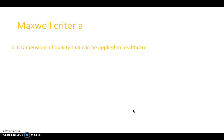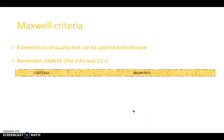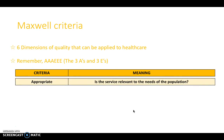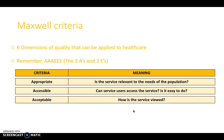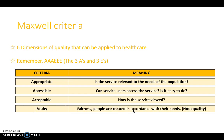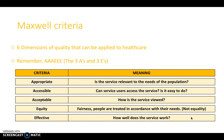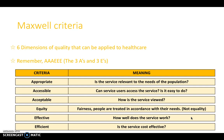Next, we'll look at Maxwell criteria — the six dimensions of quality that can be applied to healthcare. A lot of people like to think of these as the three A's and three E's. The three A's are: appropriate — is the service relevant to the needs of the population it's serving? Accessible — can service users access the service and are there appointments at available times? And acceptable — how is the service viewed? Then the three E's: equity — is it fair and are people treated in accordance with their needs? Note this isn't equality; it's not treating everyone the same but treating people in accordance with their needs. Effective — does it work? And efficient — is it cost effective?